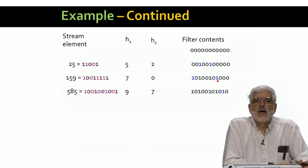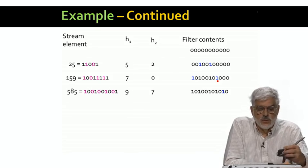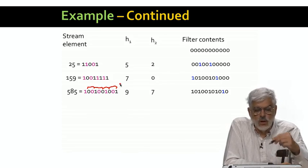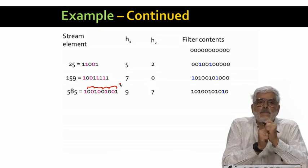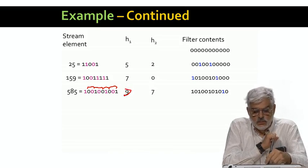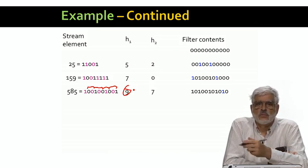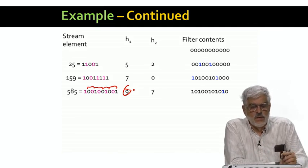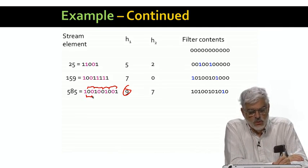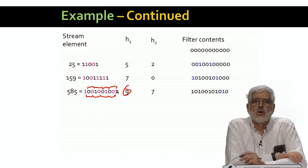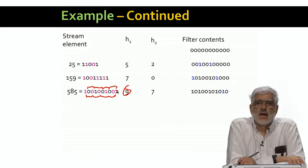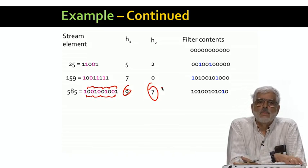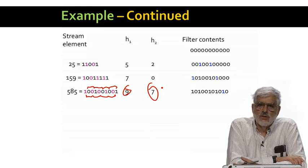The third to arrive is 585. The odd positions form 0, 1, 0, 0, 1, and that's 9. 9 modulo 11 is 9. The even positions form 1, 0, 0, 1, 0, which is 18 and modulo 11, that's 7.